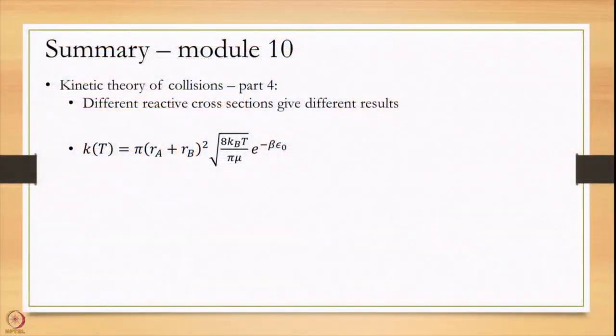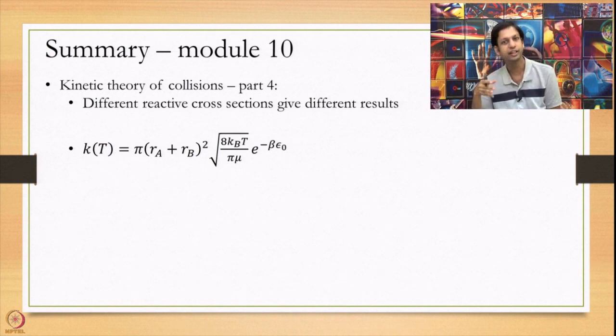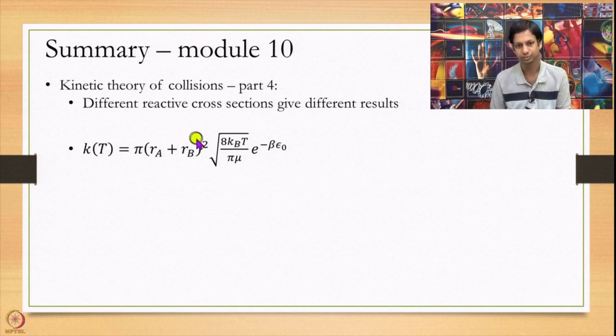In summary, today we have looked at different reactive cross sections and defined what the reactive cross section is: the area in which B has to be such that a reaction will happen. By calculating the reactive cross section with the condition that reaction happens only if the energy along the reaction coordinate exceeds ε_0, we can derive the Arrhenius equation. In the next module, we will see how to use this to solve actual problems. Thank you very much.